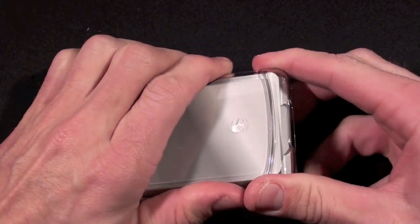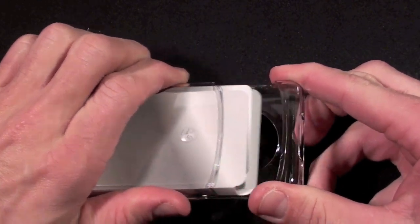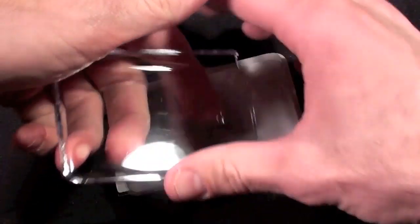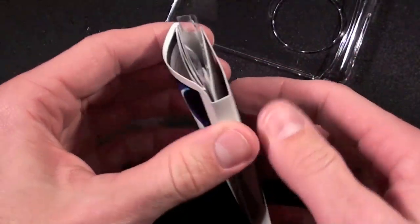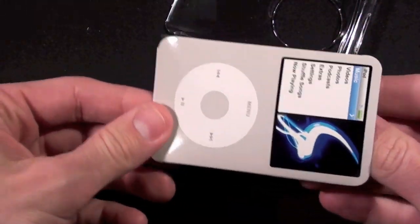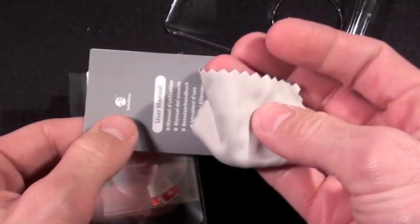Here we have the case, and inside if we just pull this apart is the extras that we get. So we should have the screen protectors in here. We have the microfiber cloth.